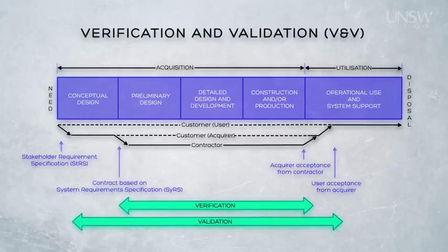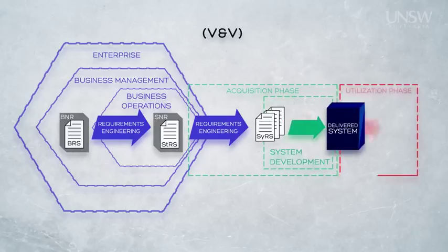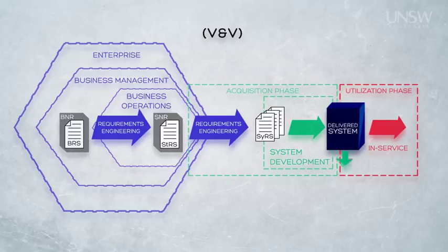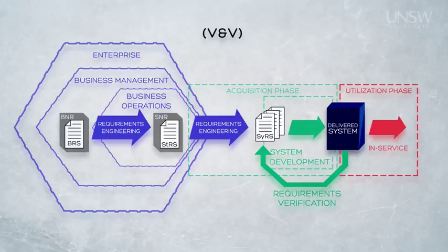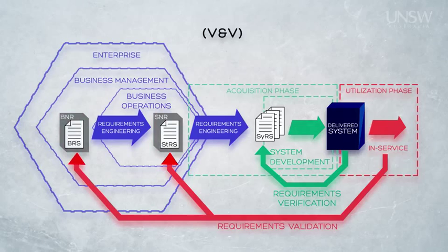Often, these two associated aims are combined into the generic term verification and validation, or V&V. Returning to our diagram showing how requirements engineering assists in the development of requirements, we can now work backwards. Before the customer accepts the system from the contractor, the delivered system is verified against the system specification — checking that the contractor has delivered the system they were contracted to build. Before the system is put into service, we must validate it against the stakeholder needs and requirements, and then the business needs and requirements, to ensure both levels are met.